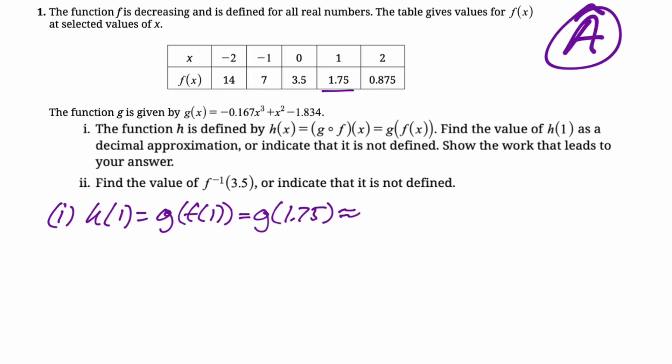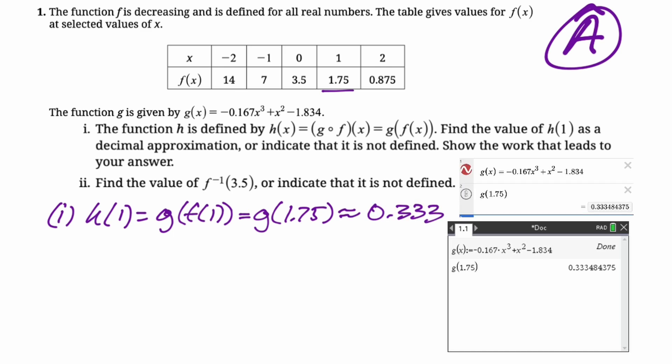I use both. I prefer the calculator. So here's my calculator work. So I get 0.333. So let's write that down. If you're choosing to use Desmos or that's what you have available to you, I just define the graph. It looks a little weird on my screen there. I don't know. I just typed it in. And then I plugged in g(1.75). Got the same answer. So that's reassuring.